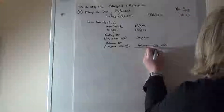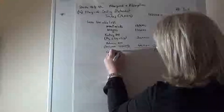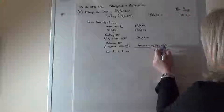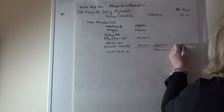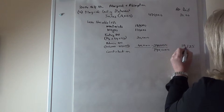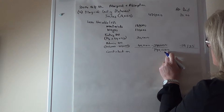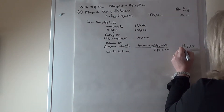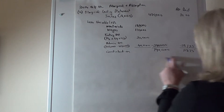Those variable costs total 290,000, and taking that out of sales gives a contribution of 190,000. The per unit variable cost is 290,000 divided by 16, giving 18.125, and the contribution per unit is 190,000 divided by 16, which is 11.875.